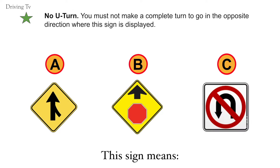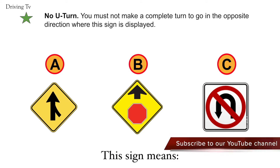No U-turn. You must not make a complete turn to go in the opposite direction where this sign is displayed. The correct answer is C. No U-turn.